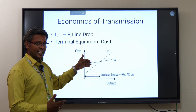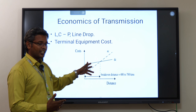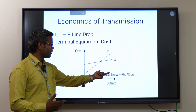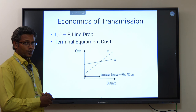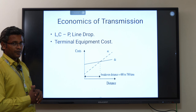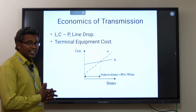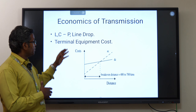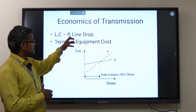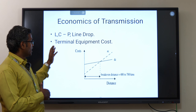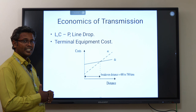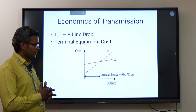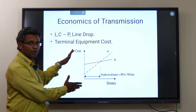Above the break-even distance, if you want to transmit electrical power, we prefer DC. The break-even distance varies from 400 to 700 kilometers depending on several factors. For DC transmission, we do not consider inductance and capacitance — only resistance plays a major role — and the power transfer capability is more. Also, line drops are less in DC transmission, and terminal equipment cost will be less for long-distance DC compared to AC transmission.